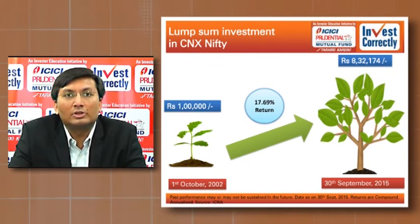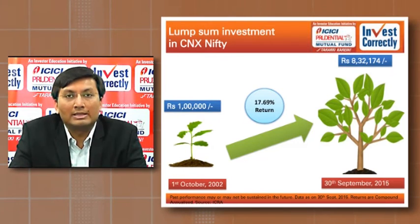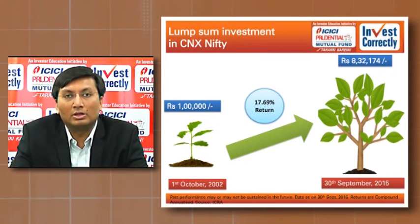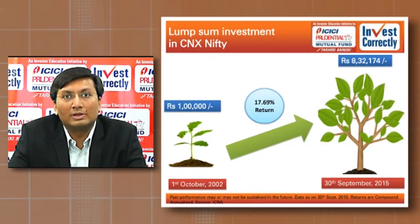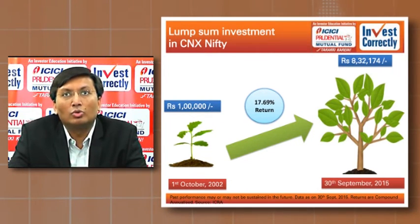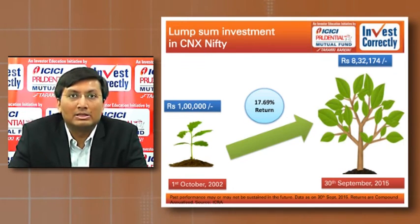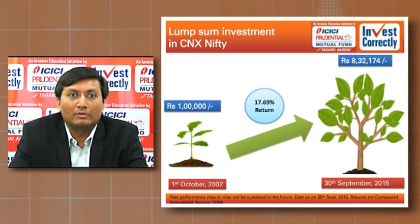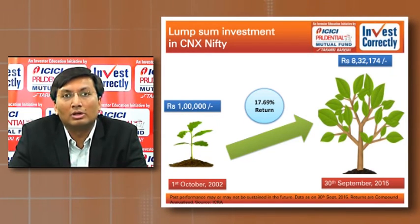There are two ways in which you can typically invest in mutual funds. One is a lump sum investment — investing a large amount at one point in time. The other is a SIP, or Systematic Investment Plan, where you keep investing every month or quarter over long periods and take advantage of the compounding of equity markets. As a representative example on Nifty, if you had invested 1 lakh rupees in a mutual fund tracking Nifty stocks on 1st October 2002, it would have grown to around 8 lakh rupees by 30th September 2015 — a CAGR of approximately 17.5%. While past performance may not repeat, equity markets, if approached with discipline, are capable of giving reasonably good returns over long periods of time.